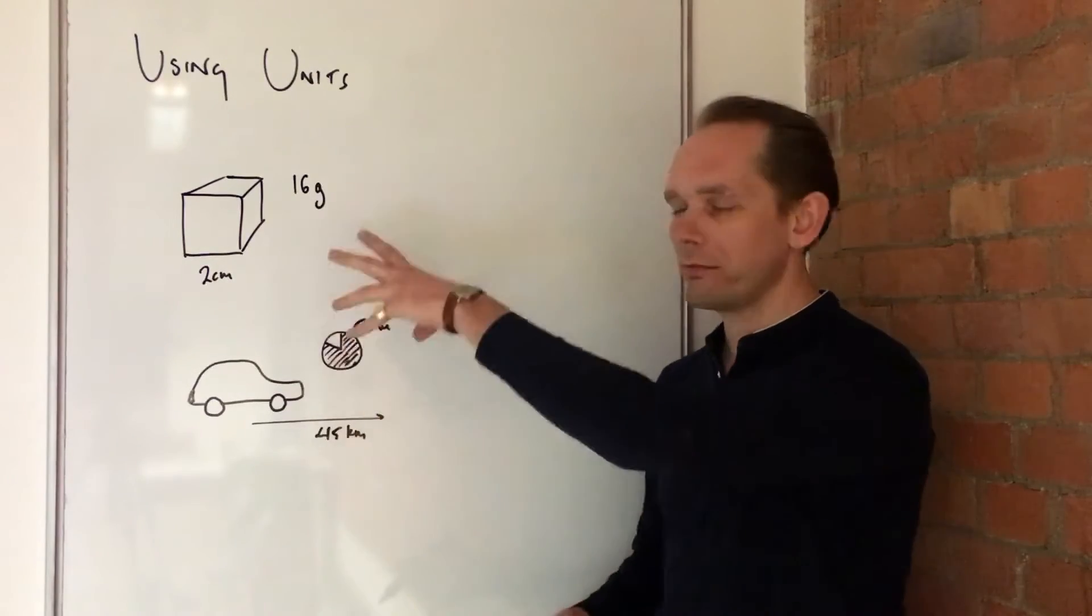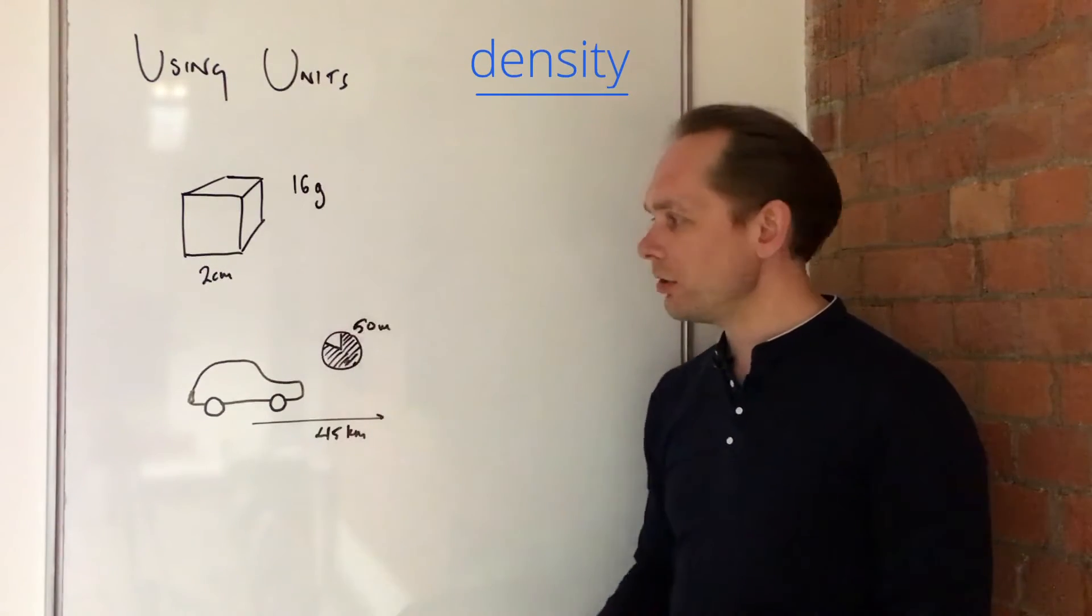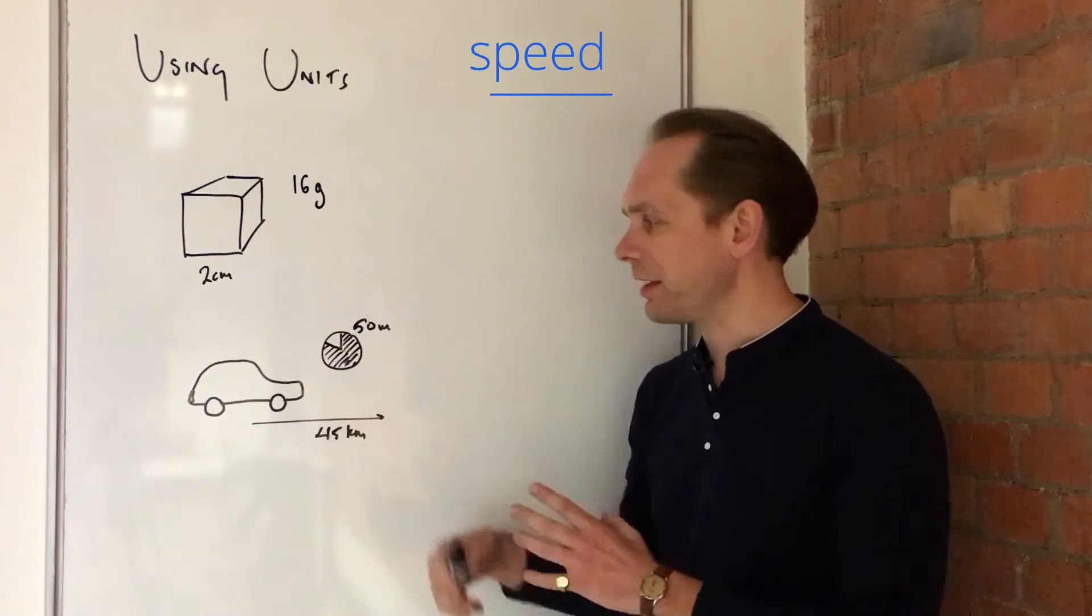So here are two examples. They're taskmine questions where you're asked, in this case, to find the density of this cube, and in this case, to find the speed or velocity of this car, let's say speed in this case.